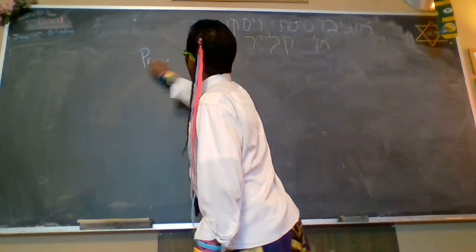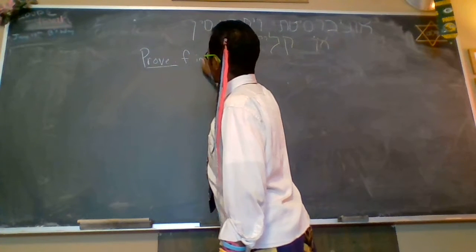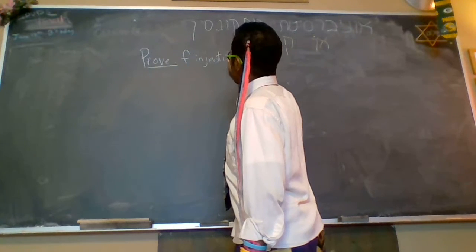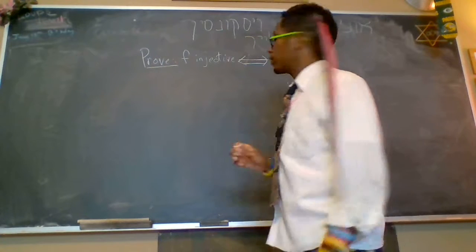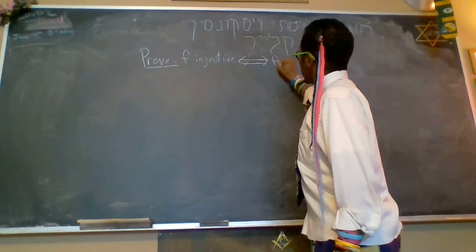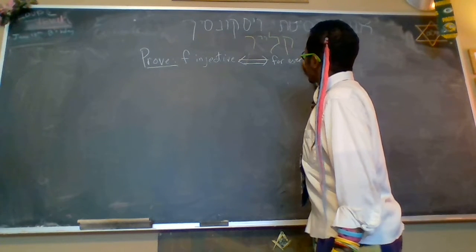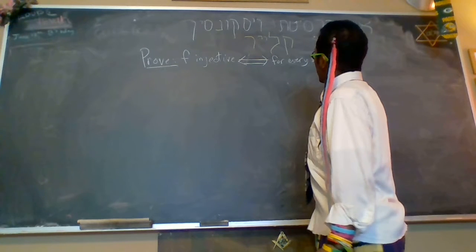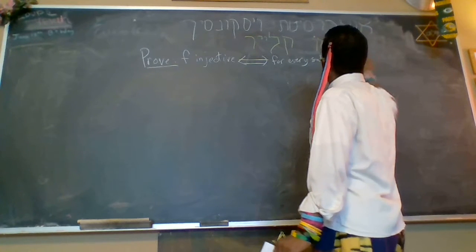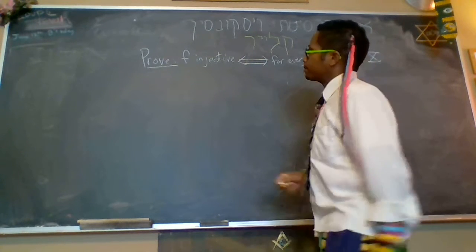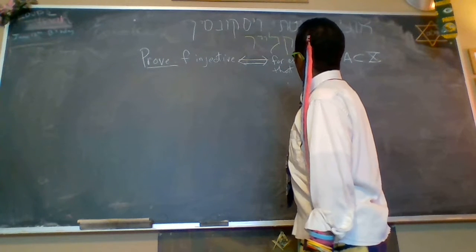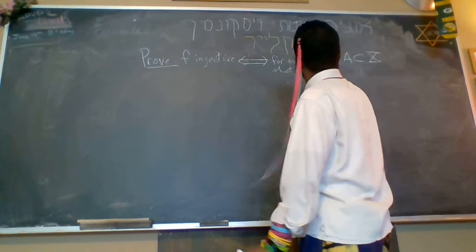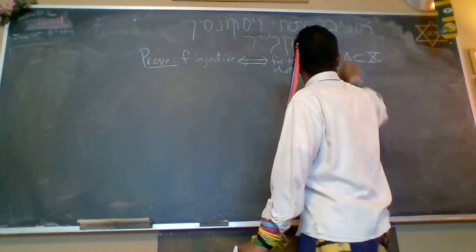We're going to prove that if f is injective, this holds if and only if for every subset a in x, that f inverse of f of a is equal to a.